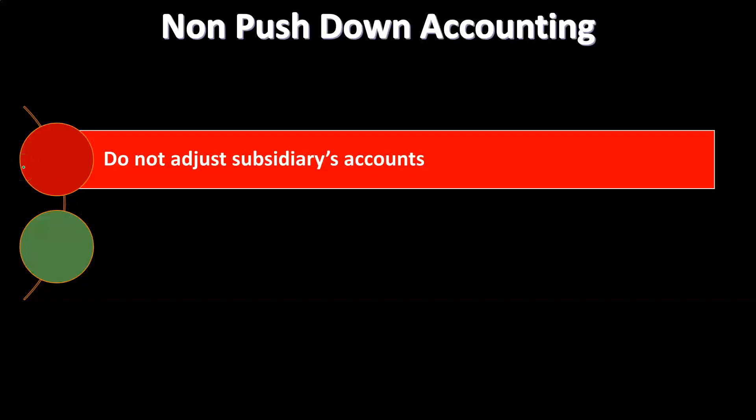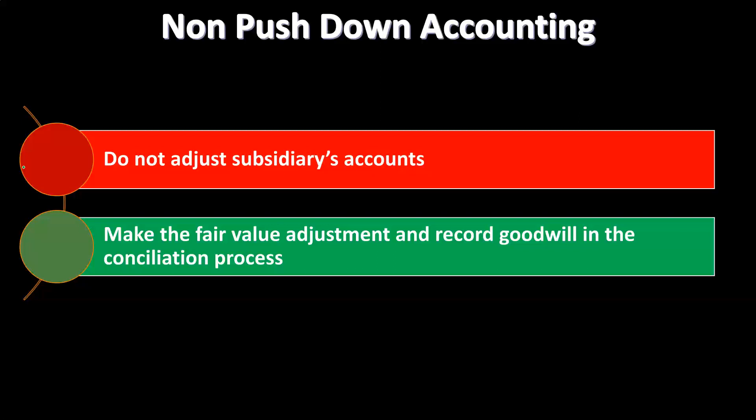With non-push down accounting, the parent records the investment at the fair value purchase price of the stock, and the subsidiary does nothing — it just keeps its books moving forward as normal. You would have no adjustment to the subsidiary's books. The only thing that has changed is the ownership of the stock. You would then handle the fair value adjustments and goodwill recording during the consolidation process every time you prepare consolidated financials combining parent and subsidiary.